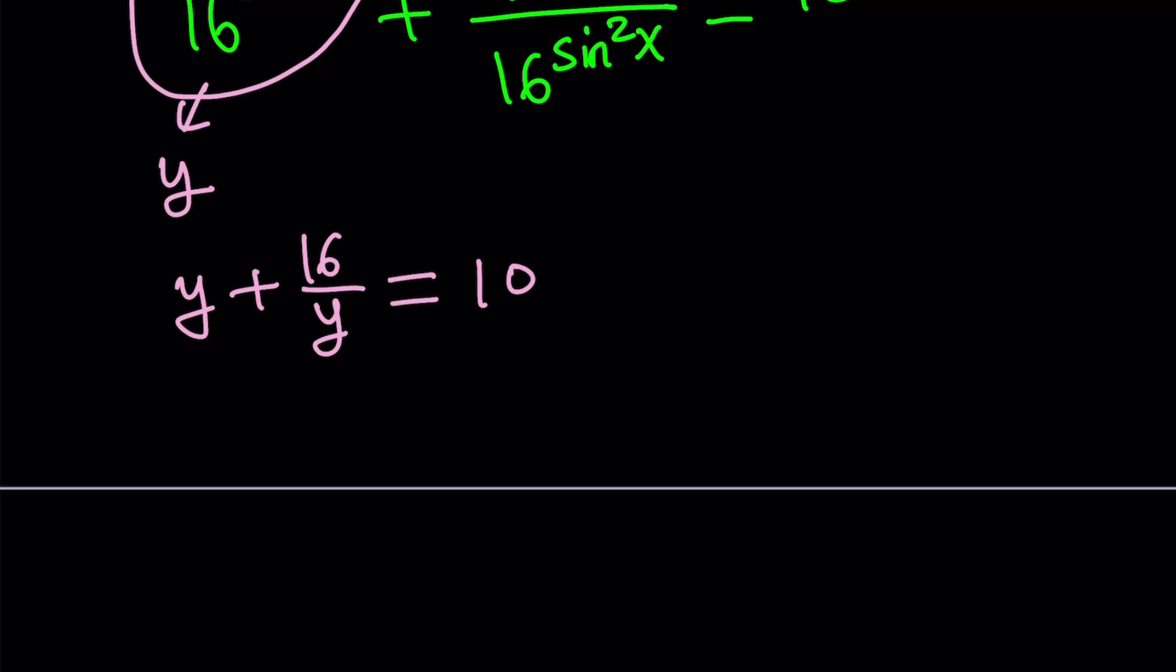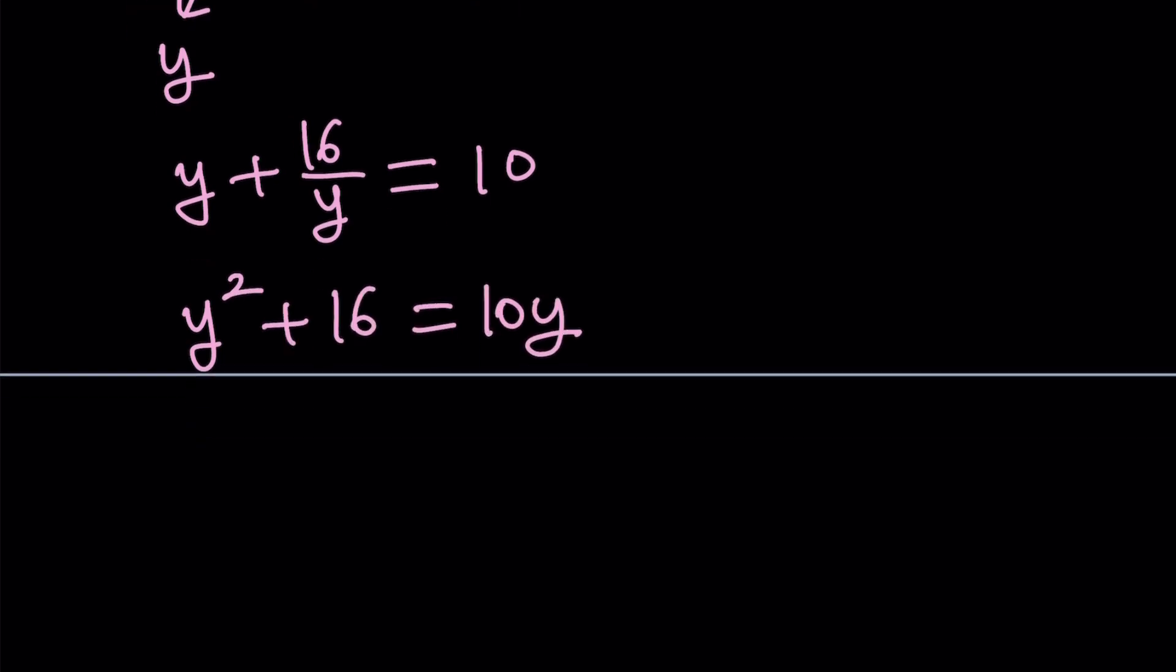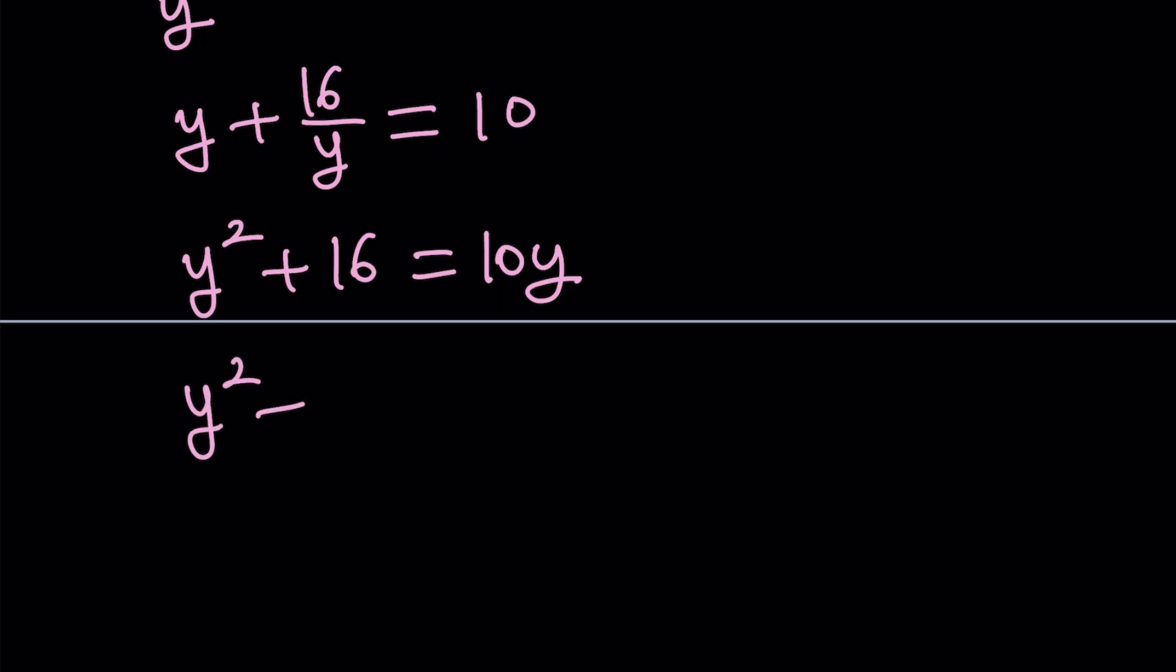Multiply both sides by y. You get the following. Subtract 10y and factor. This can be written as y minus 2 times y minus 8 equals 0.